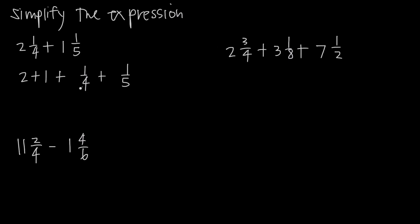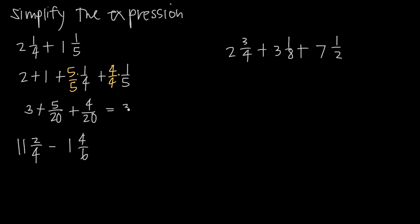What's my common denominator between 4 and 5? Looking for the least common multiple using multiples of 5, I can see it's going to be 20. I'm going to multiply 1/4 by 5/5 and 1/5 by 4/4 to get 20 in the denominator. So 2 plus 1 is 3, and 5/20 plus 4/20 is 9/20. I get 3 and 9/20, and this is my mixed number answer.